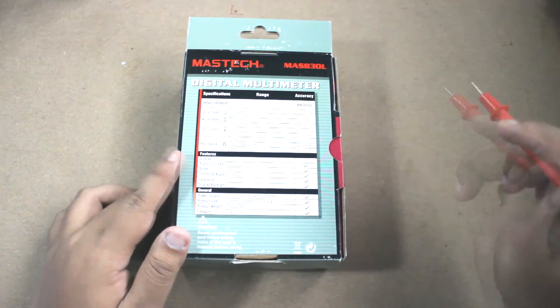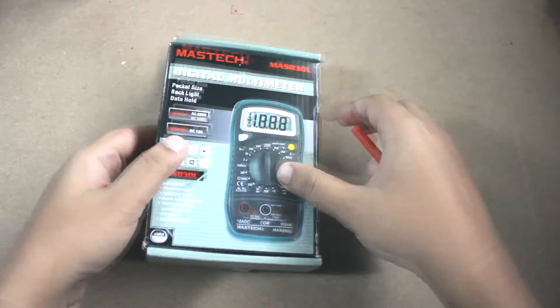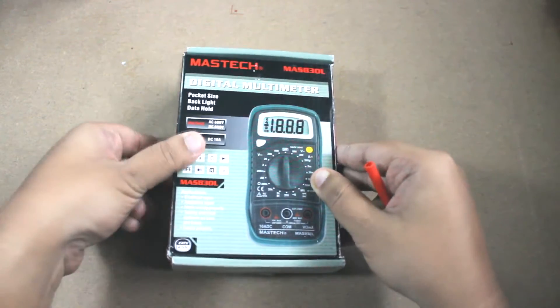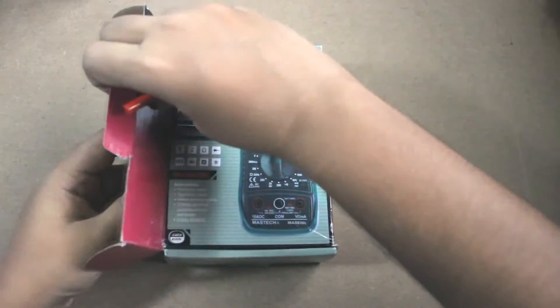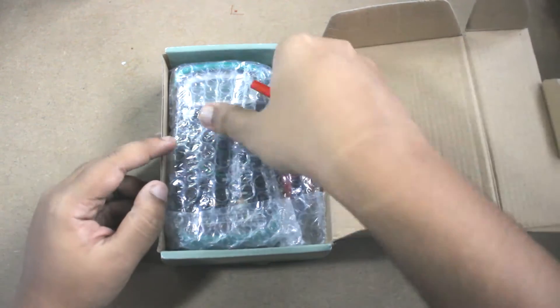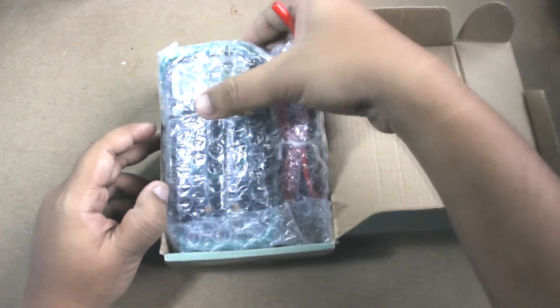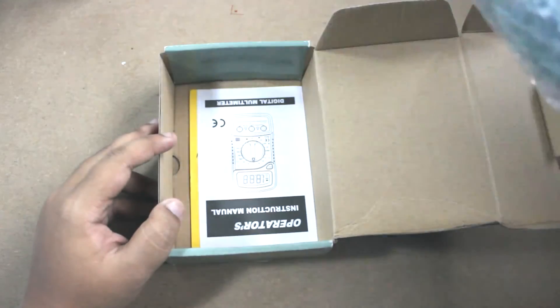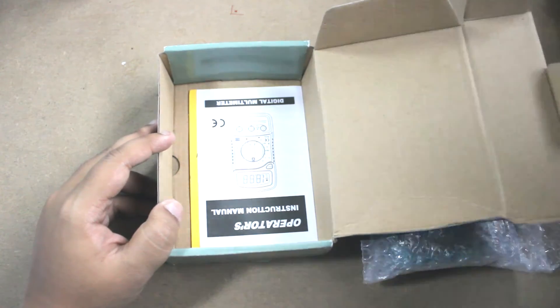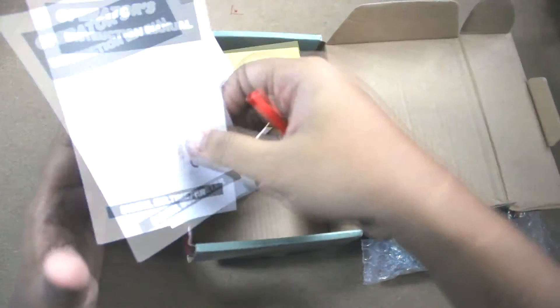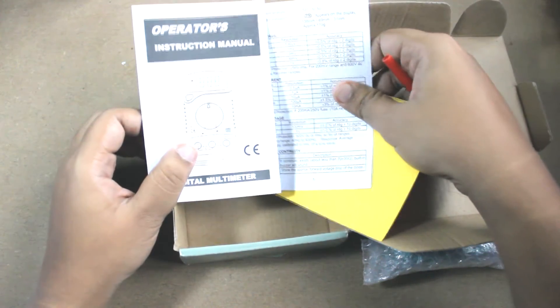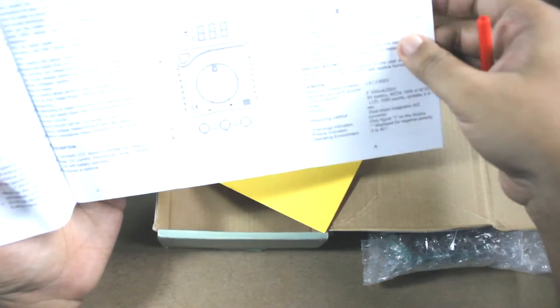So let's unbox it. This is the main multimeter and the probes we can see. Let's put these aside and check what else is in the box. This is the instruction manual, nothing special, five pages of instruction manual, all in English, that's good.